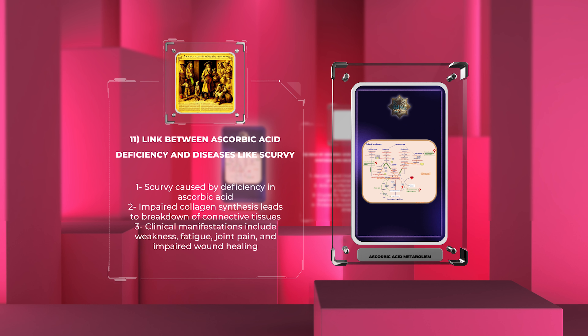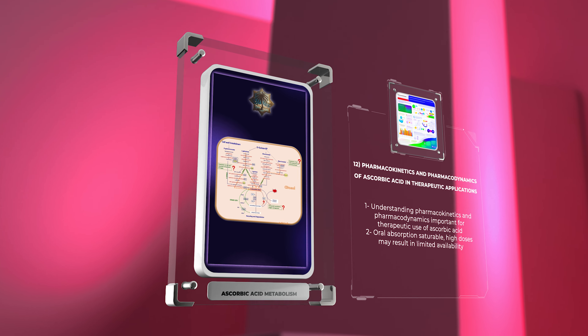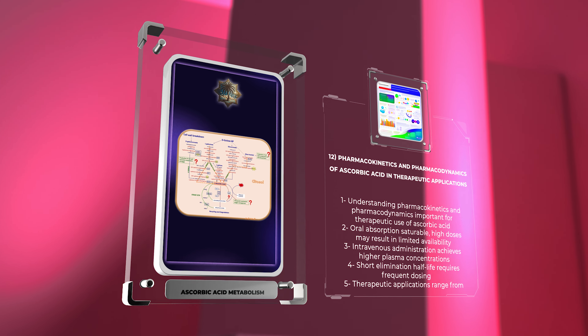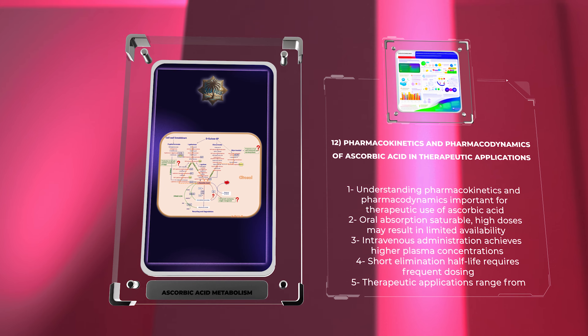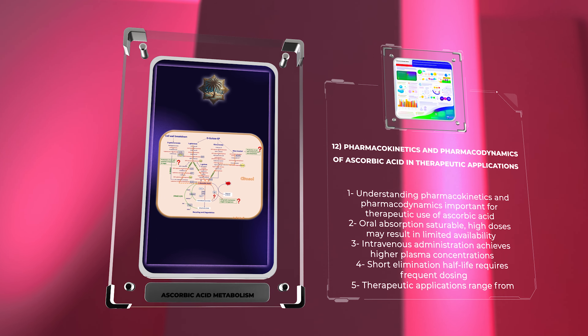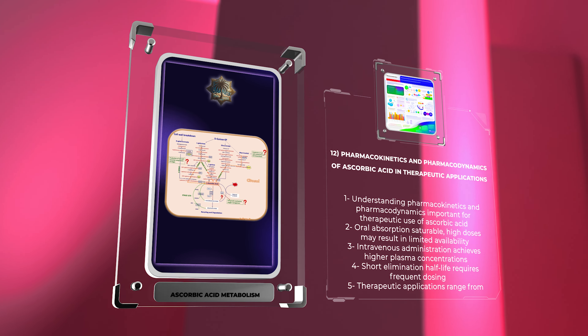Recognizing the link between ascorbic acid deficiency and scurvy is crucial to prevent and manage this debilitating condition, highlighting the significance of adequate vitamin C intake in maintaining overall health. Understanding the pharmacokinetics and pharmacodynamics of ascorbic acid is essential for its appropriate therapeutic use. Oral ascorbic acid absorption is saturable, and high oral doses may lead to limited bioavailability.